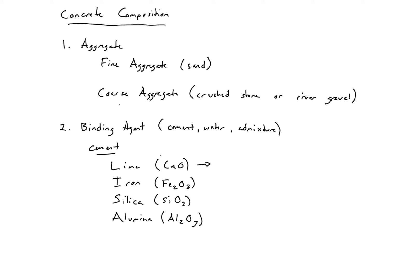So lime we can get from limestone. The iron is typically some type of mill scale or iron ore. And then both silica and alumina we can get from either clay or shale.